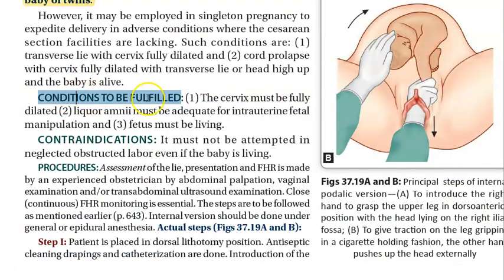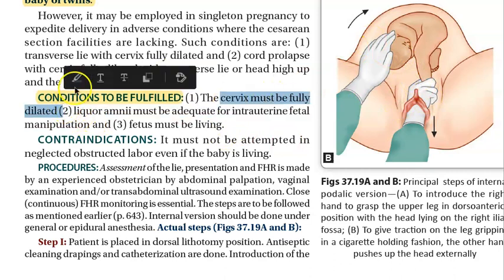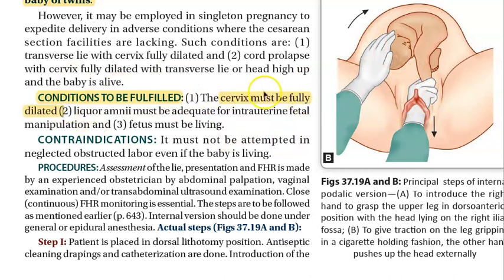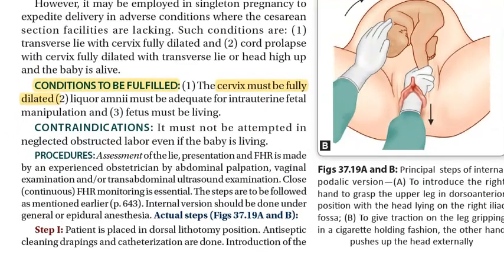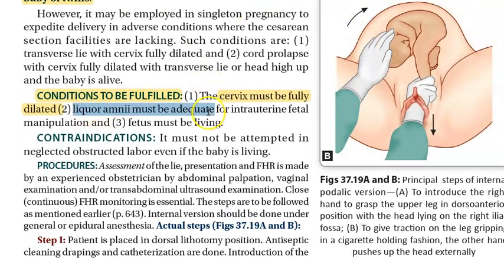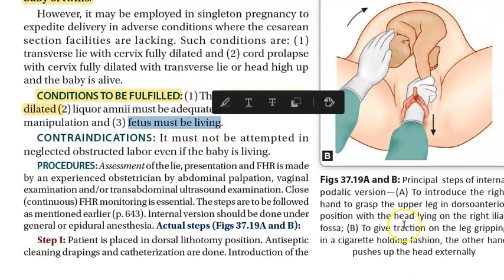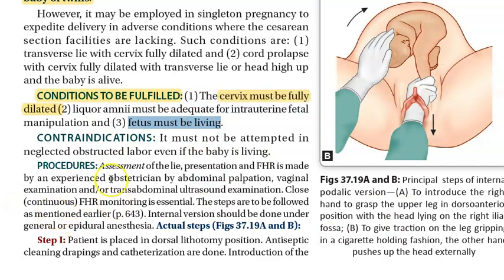The conditions that must be fulfilled before performing this procedure: the cervix must be fully dilated, because your hand has to go inside. There should be amniotic fluid around the baby — liquor amnii must be adequate — because you are holding over the liquor amnii and turning the baby. The fetus must be living, otherwise there is no point in doing this.